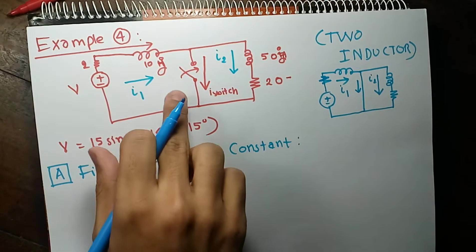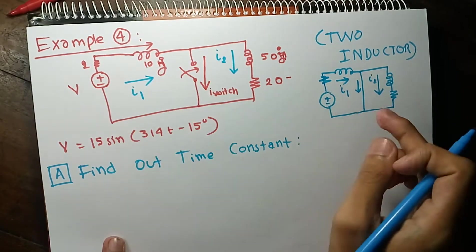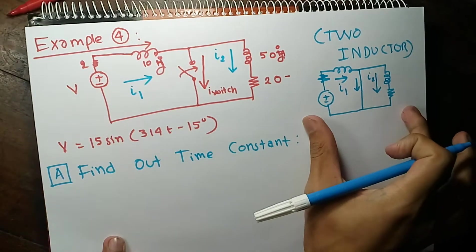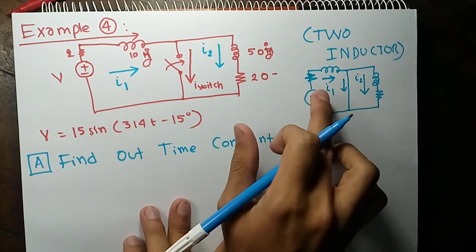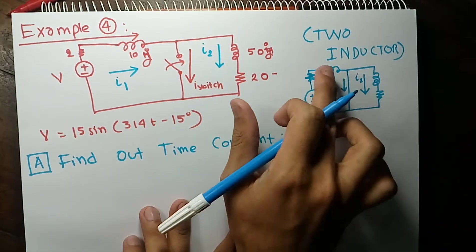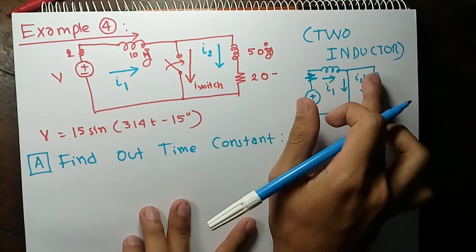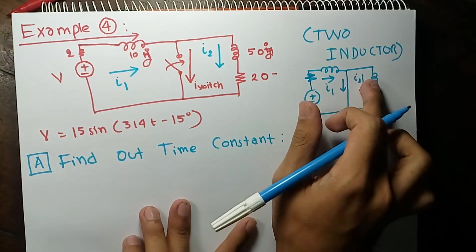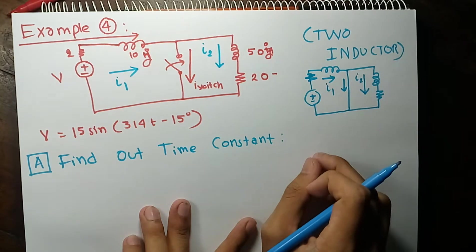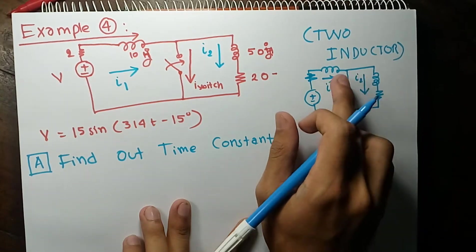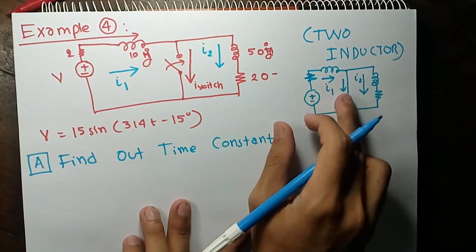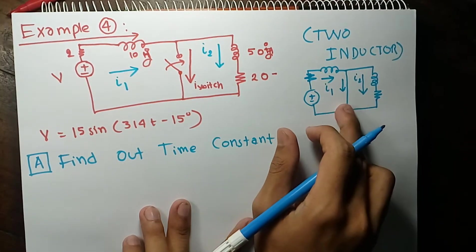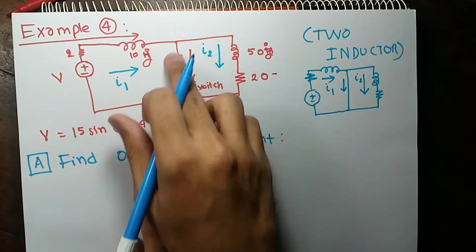After switching, the circuit will look like this. If you can find out this current and this current, then the subtraction of them will give you the current through the switch. That's what we want.